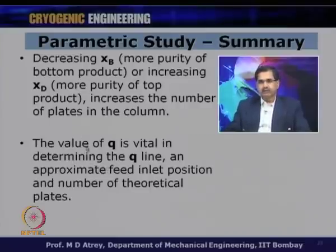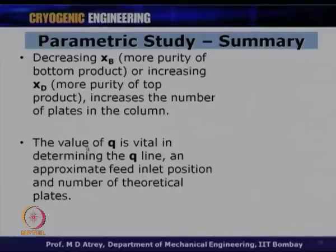Summarizing the parametric study: the number of theoretical plates decreases as the operating line approaches the diagonal. The slope of the enriching section operating line decreases by increasing D or reducing Qd. Decreasing XB or increasing XD (more stringent purity requirements) increases the number of plates. The value of Q is vital in determining the Q line slope, feed inlet condition, and number of theoretical plates. With this summary of different parameters, I would like to summarize the entire gas separation chapter.